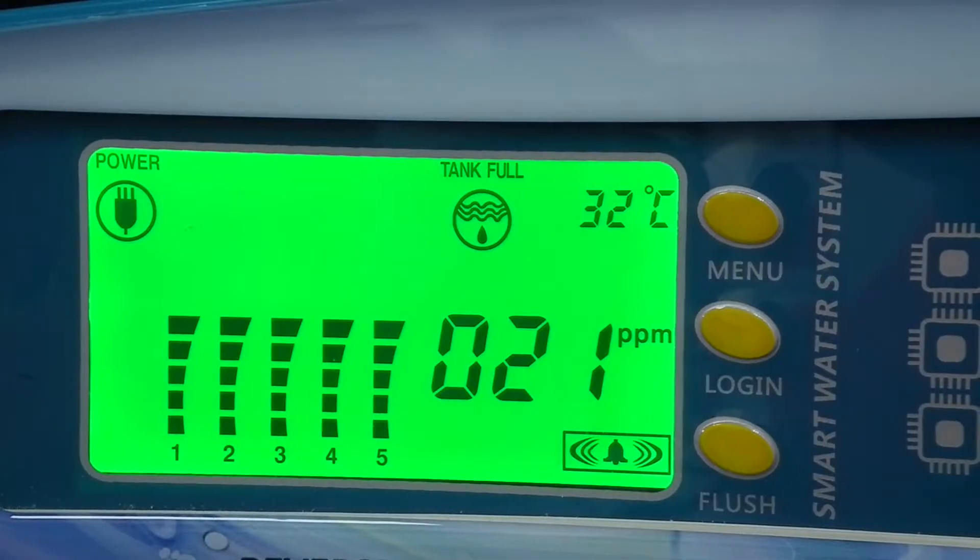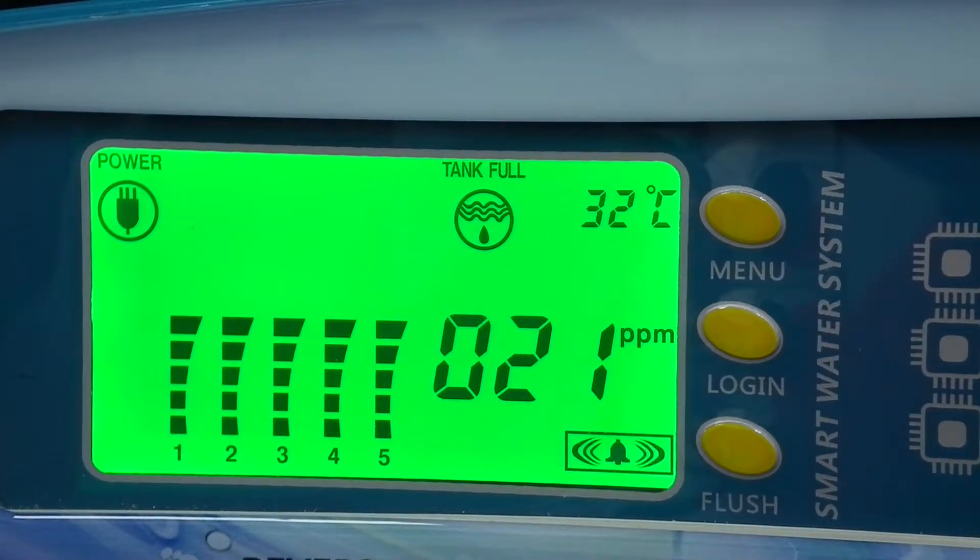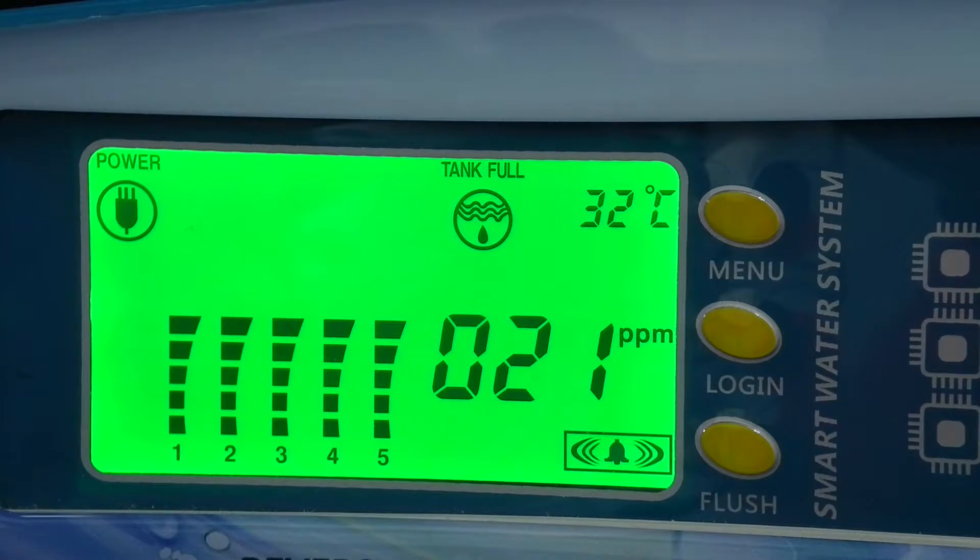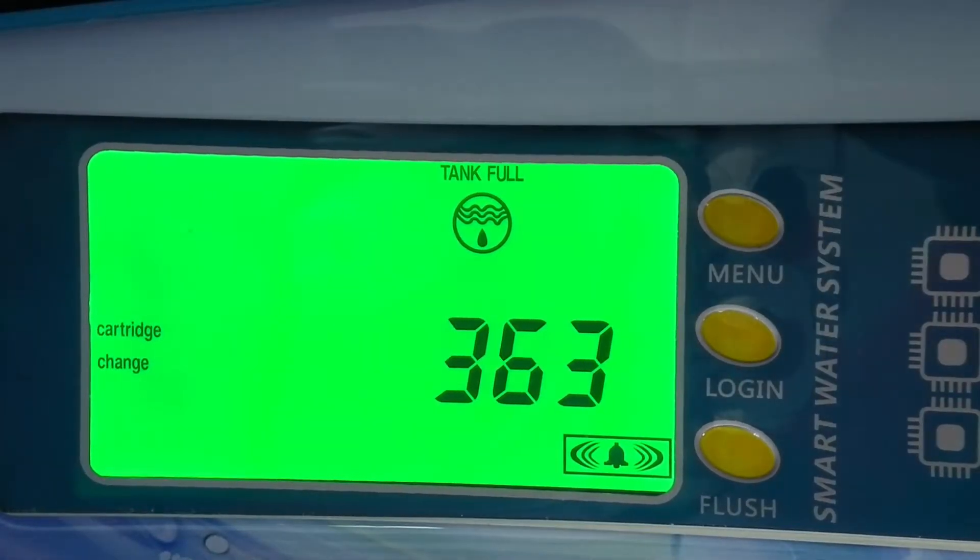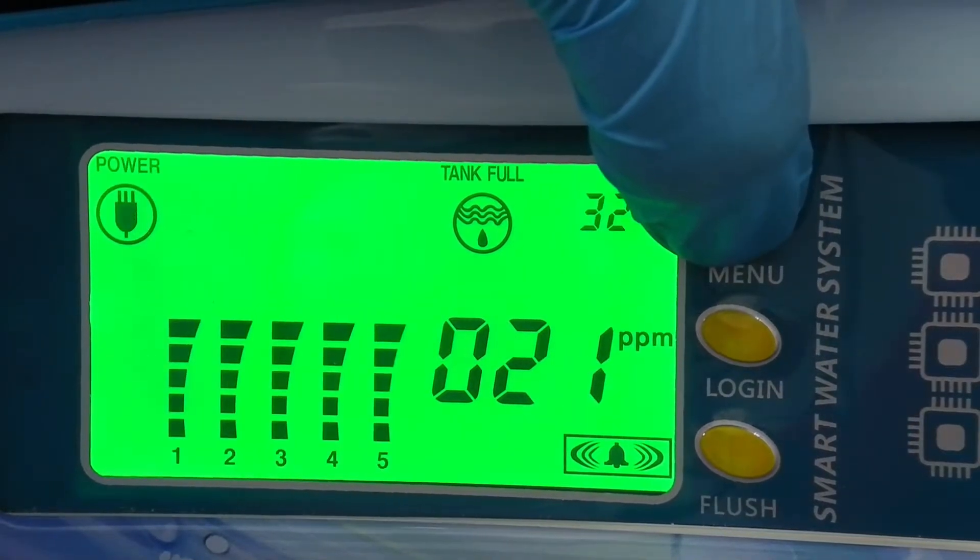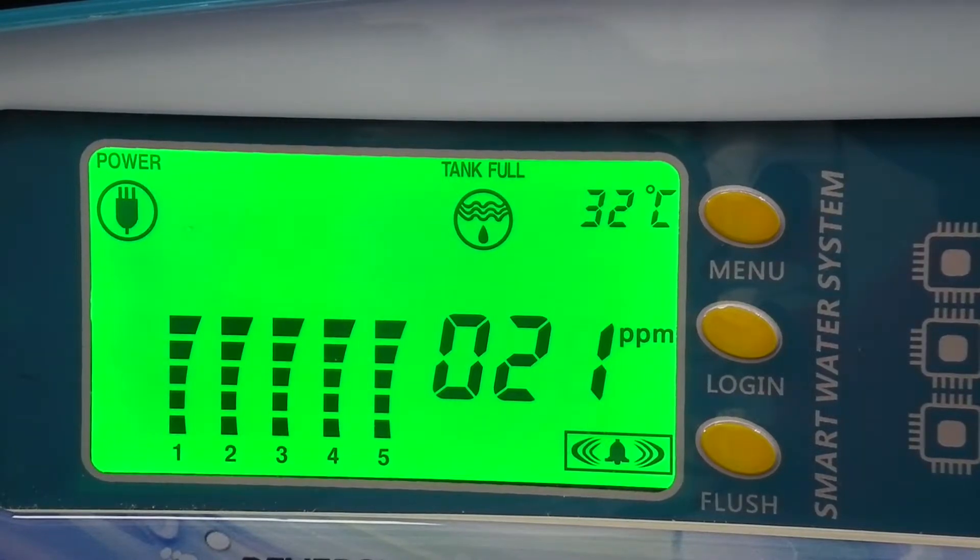The BNB Digital Controller enhances the system performance and user experience. It will display reduced water TDS, temperature, track filter lifetime, perform mode to flush membranes, monitor operation mode, and protect the system from common failures and much more. The digital controller has three buttons in front for user interaction: menu, login, and flush. To check the display for the days left until the next filter change, press the login button. To go back to the main menu, press the menu button.